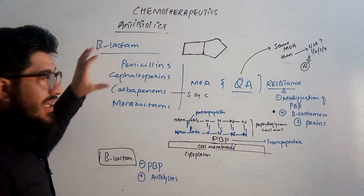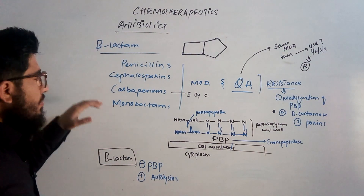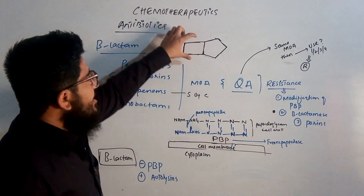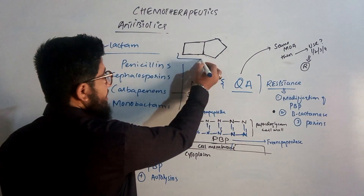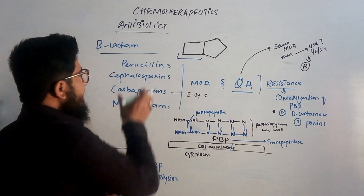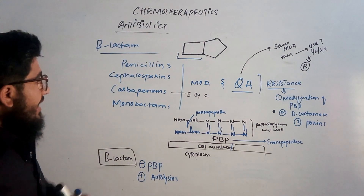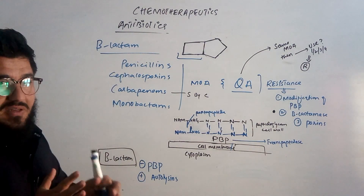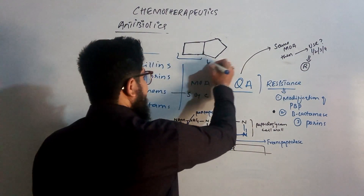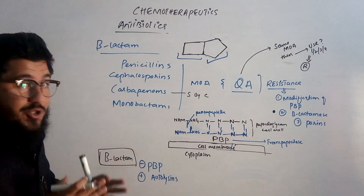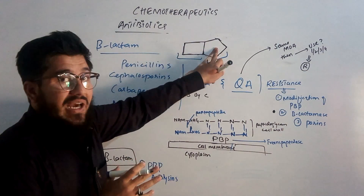All of these are called beta-lactam antibiotics because penicillins, cephalosporins, carbapenems, and monobactams all share this particular square structure known as the beta-lactam ring. This structure is common in all these antibiotics, and they all have slight differences in the second structure, which is the thiazolidine ring. So we basically have two rings: number one, the beta-lactam ring, and number two, the thiazolidine ring.